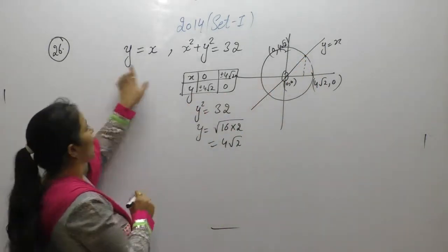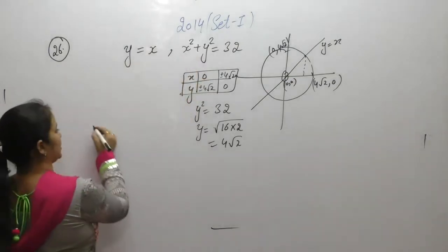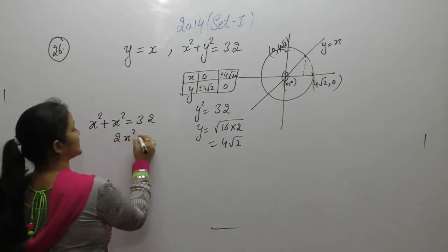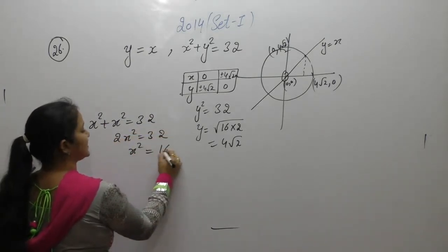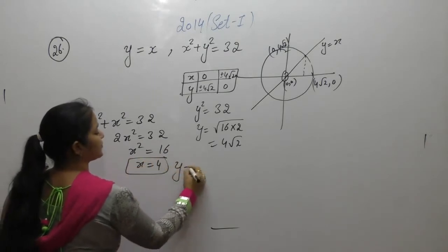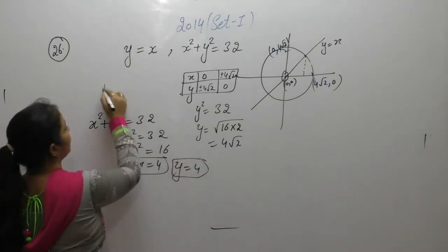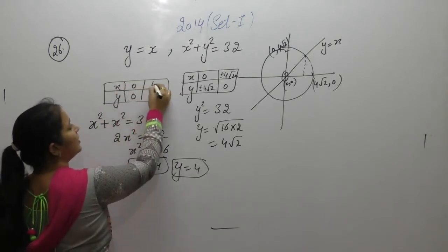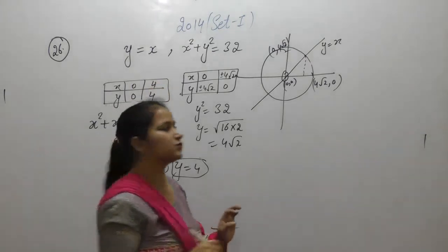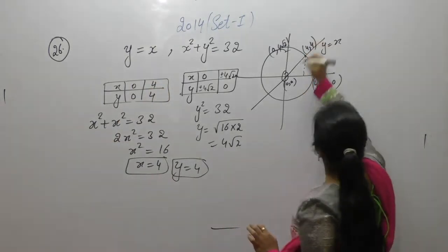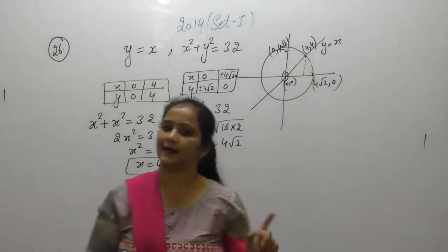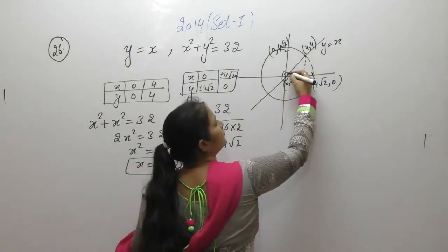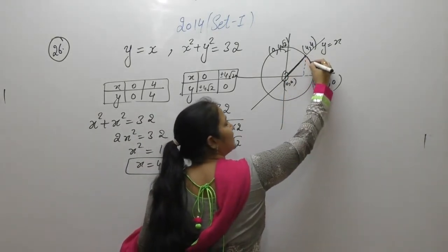Now we want to find the point of intersection where the line and circle meet. Put y = x into the circle equation: x² + x² = 32, so 2x² = 32, x² = 16, x = 4. If x = 4 then y = 4. So the point of intersection of the line y = x and the circle is (4, 4).